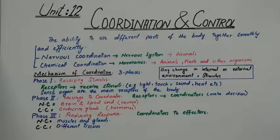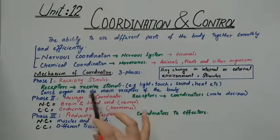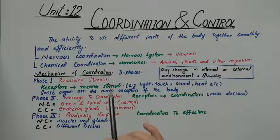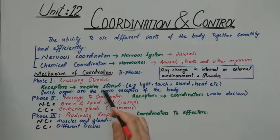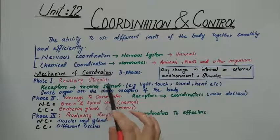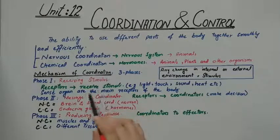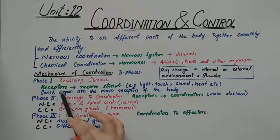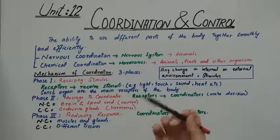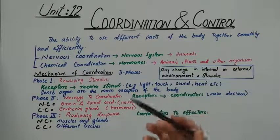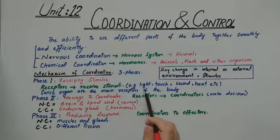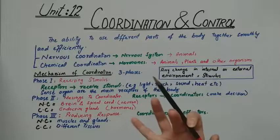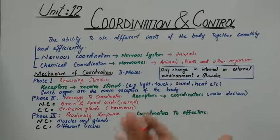Any stimuli that the body can respond to — the body has specific parts which can receive those stimuli. The organs, tissues, and cells that receive and feel stimuli are known as receptors. A receptor can be an organ, a tissue, or a cell. The main receptors of the body are the five sense organs: eye, ear, skin, tongue, and nose.